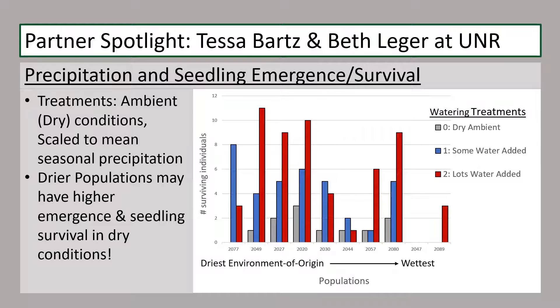Tessa and Beth are also examining whether different populations of these focal species vary in how they respond to competition with cheatgrass, an invasive annual grass found across the western U.S.